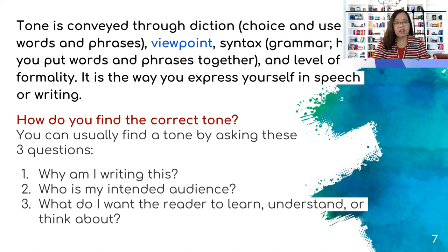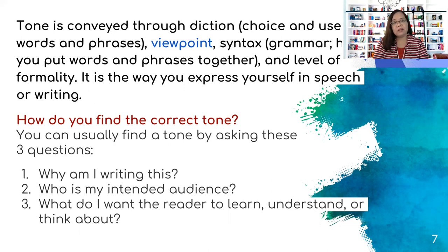There are three things you can ask yourself to determine if you are using the correct tone. First: why am I writing this? Second: who is my intended audience? That question should tell you how you can connect with them — will you be able to connect with them better if you're formal or casual? Third: what do I want the readers to learn, understand, or think about after reading my feature? These are things you can ask yourself before determining how to approach the writing of the article.